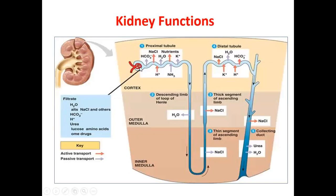The glomerulus has blood vessels associated with it. The kidney receives a rich blood supply through a branching system of blood vessels that ultimately form very small vessels to supply the glomerular structure.